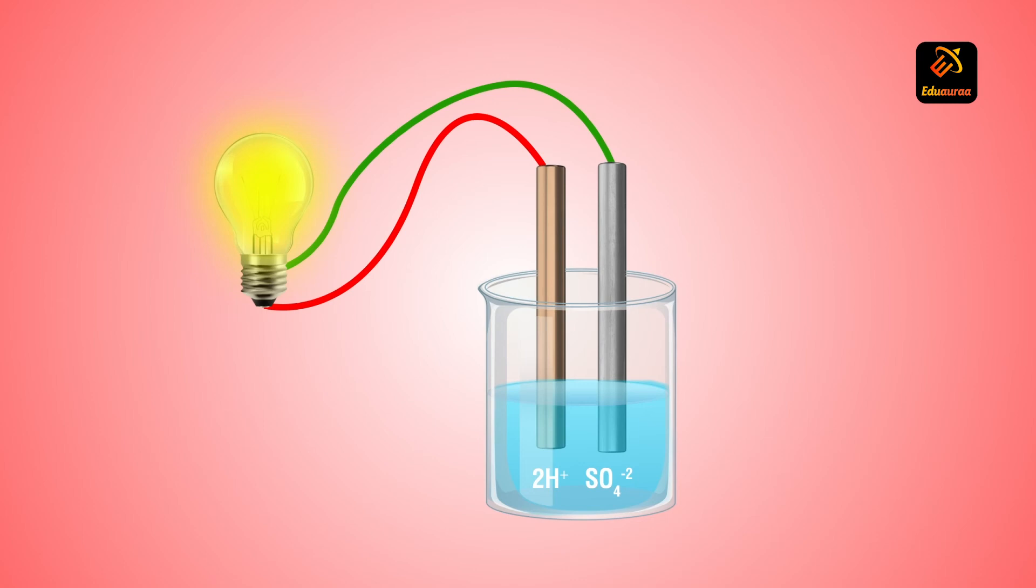In this case, copper rod becomes positive electrode, which is also called anode. Whereas, zinc becomes negative electrode, which is called cathode.